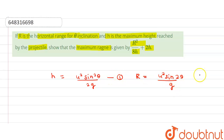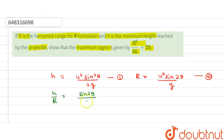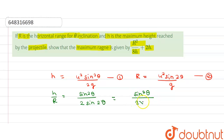Now if we divide equation 1 by equation 2, we get H upon R equal to sin²θ upon 2 sin2θ.